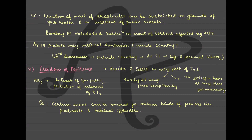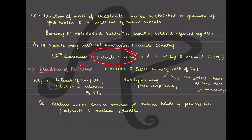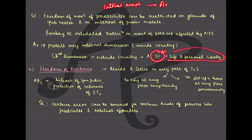The Supreme Court has also said that freedom of movement of prostitutes can be restricted on grounds of public health and interest of public morals. The Bombay High Court validated restrictions on movement of persons affected by AIDS also. Article 19 protects only the internal dimension of movement - inside the country. The other dimension, freedom of movement outside the country or going abroad, comes under Article 21, which is broadly about right to life and personal liberty. So external movement is under Article 21, and internal movement is under Article 19.